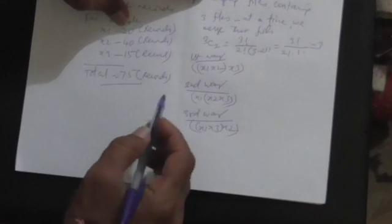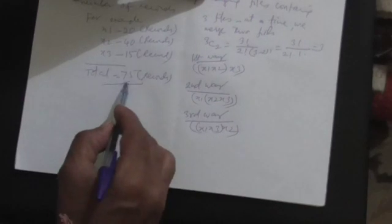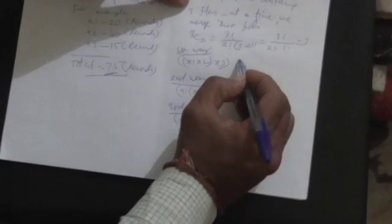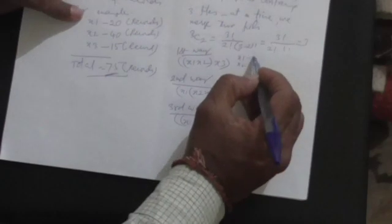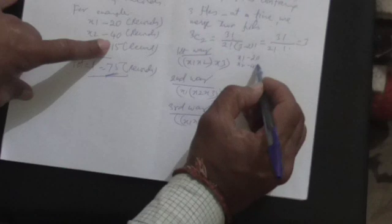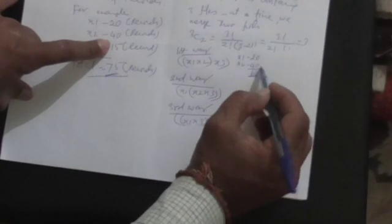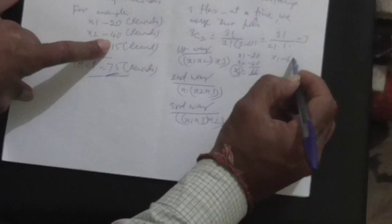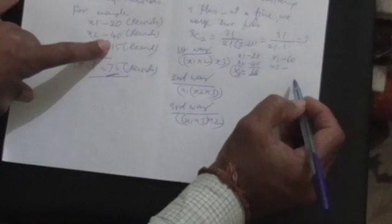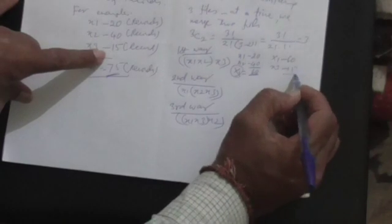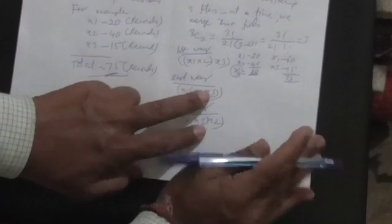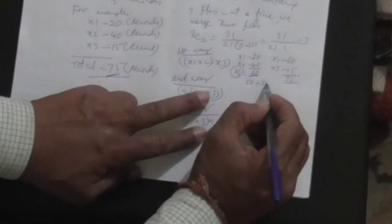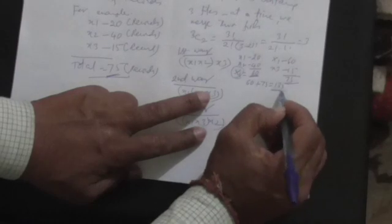Ultimately the number of records in the final file will be 75, but order of merging matters a lot. If you take the first case, X1 and X2: there are 20 records and 40 records, so there are 60 records. Now this X1 containing 60 records is merged with X3 containing 15 records, totally 75 records. When you look at the total number of merges, it is 60 plus 75, so 135 merges.